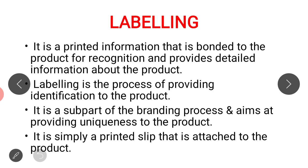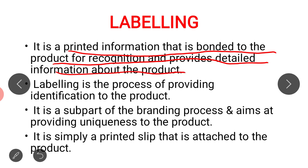So before understanding labeling, I will tell you what is a label. A label carries all the required information of the product. We have seen that when a product is packaged, there is a lot of information written on the package regarding the product — such as the brand name, where it was manufactured, how to use the product, what the ingredients are, and so on. All this information is what we call a label. Labeling is printed information that is bonded to the product for recognition and it provides detailed information about the product.